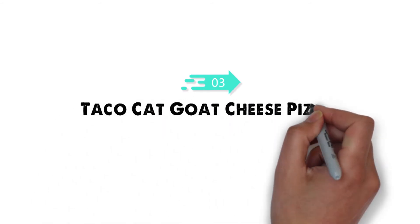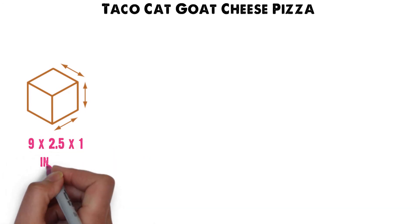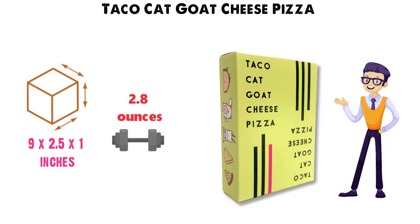At number 3, we have the Taco Cat Goat Cheese Pizza. Dimensions of this product are 9 x 2.5 x 1 inches and it weighs 2.8 ounces. The game is played keeping these 5 crazy words in mind.